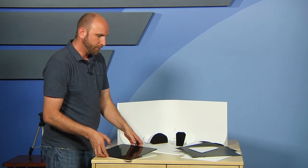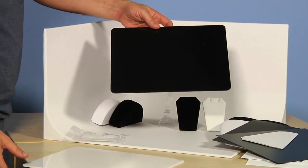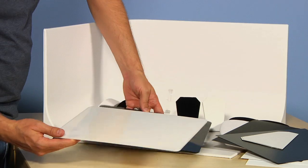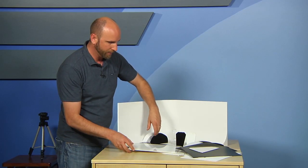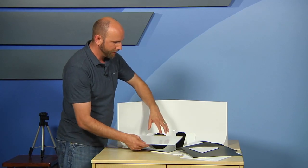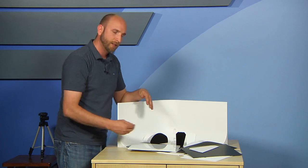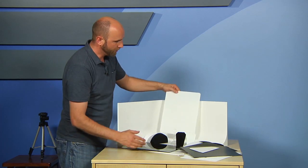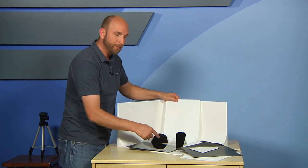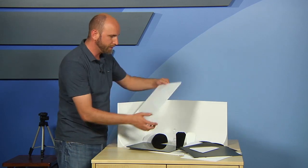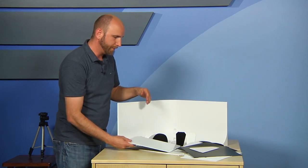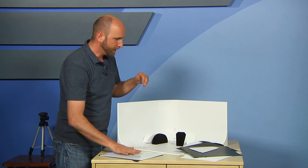The other thing that's really nice is there are these two panels. One's black and one's white. These are acrylic, high gloss. You can put these down on the psych if you want a really high gloss, either background or something to put on the bottom to reflect whatever you're shooting. Specifically, these are made for jewelry and small items, but they work for anything. That's really cool.